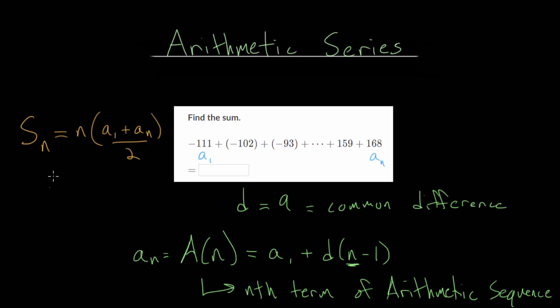So let's do that. We know the nth term, that's 168. And we know the first term, that's minus 111. And then we're going to add that common difference, which is 9, n minus 1 times. So let's add 111 to each side to be able to solve this.